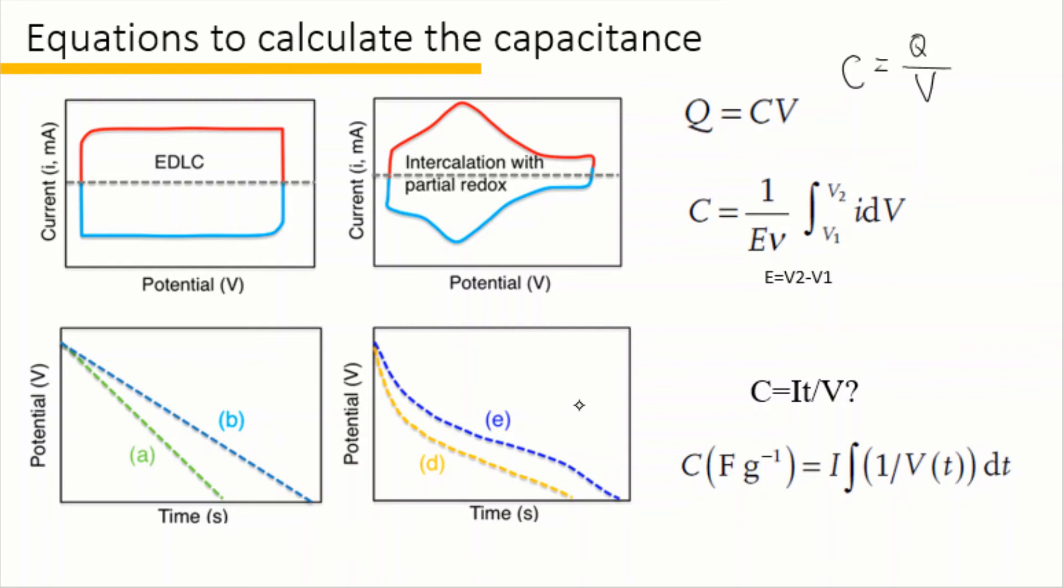When we are calculating the capacitance from GCD curve, it is a common mistake to calculate the capacitance based on C equal to i t over V for any shape of the GCD curve. The equation C equal to i t over V actually only can be applied to the supercapacitor when the GCD curve is perfectly linear. In most cases, the potential does not have linear relationship with the time, so the instantaneous capacitance actually changes when the slope of the GCD curve changes.